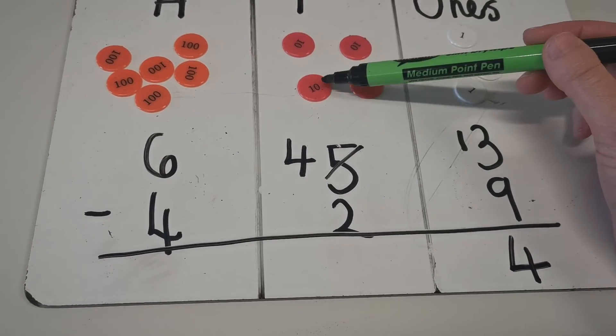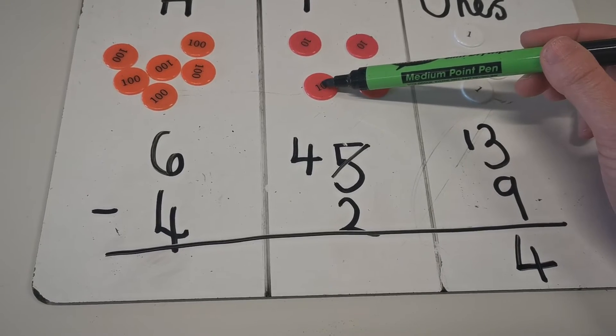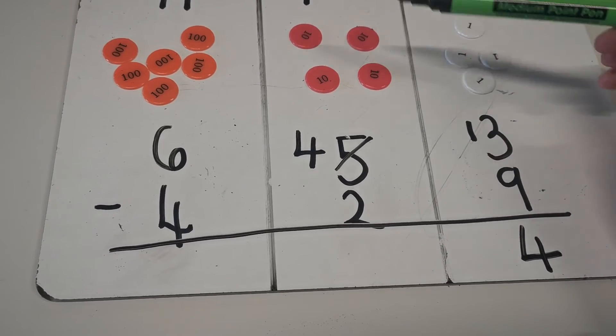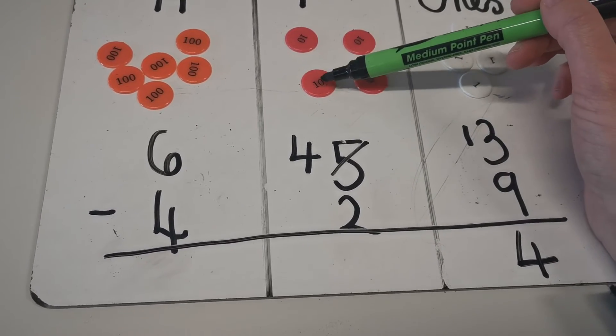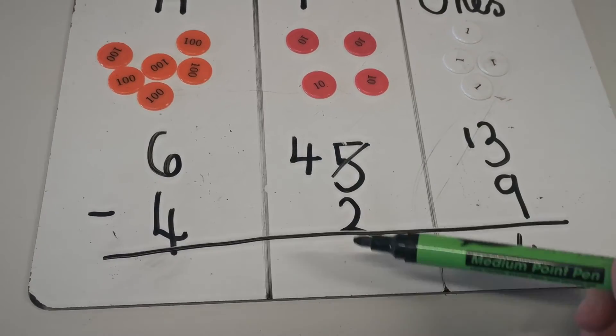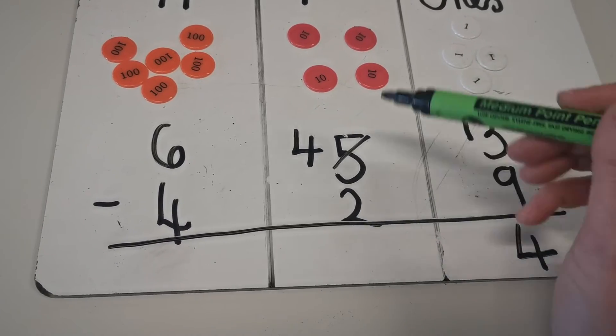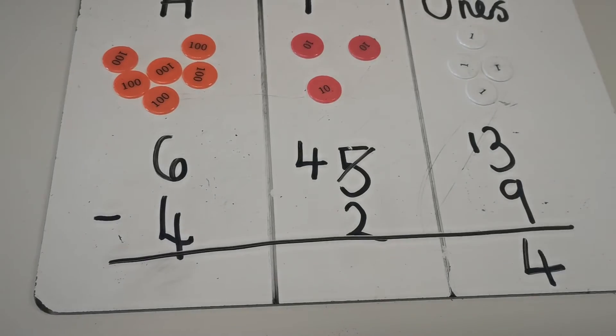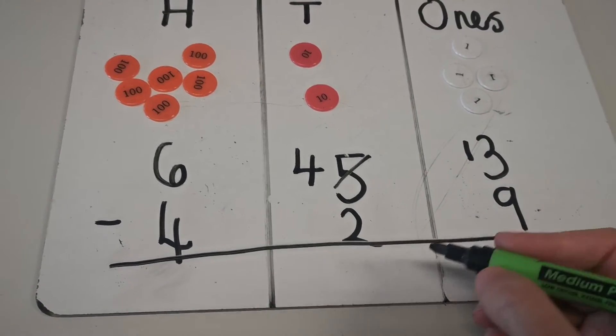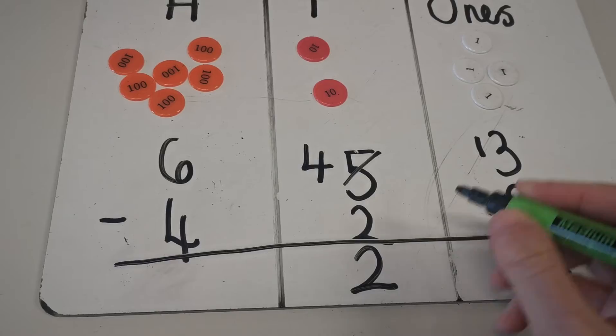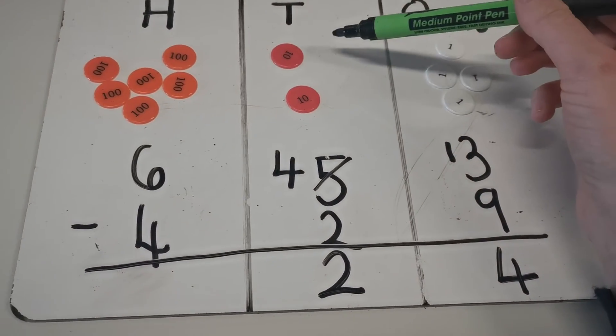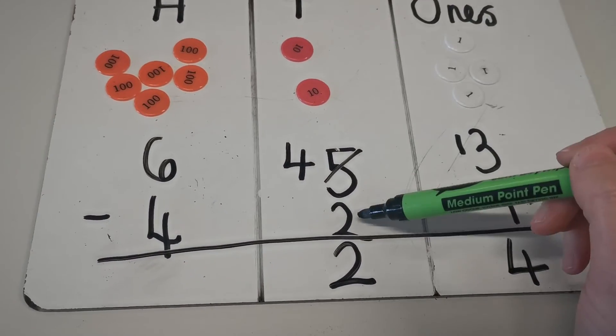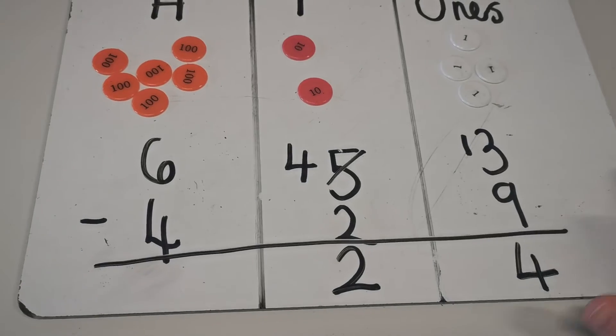Because I had to exchange one of my tens for 10 ones so I had enough ones, I've now got 4 tens and I need to subtract 2. So I'm going to subtract 2 and I'm left with 2. I'm left with 2 tens. Remember, this is a tens column, so it's like I had 40 and I subtracted 20 and I'm left with 20.